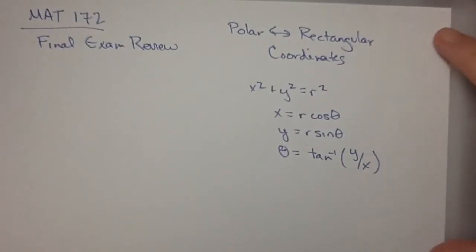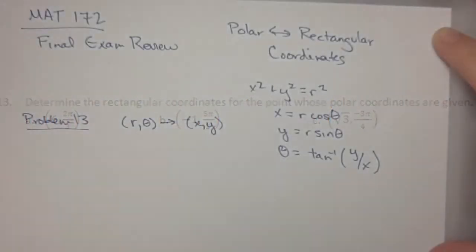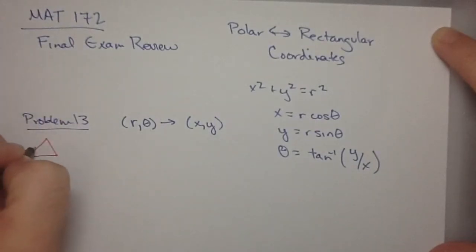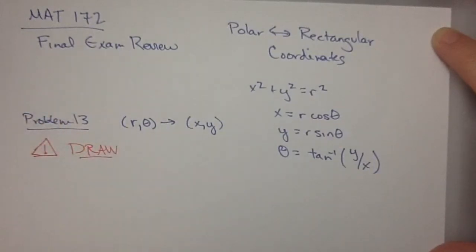So there are a series of problems about this, and we're just going to work through a smattering of them. So if we're looking at problem 13, we're given r and theta and asked to find xy. Now the first thing you have to do is draw, because it'll clear up any uncertainties you have about the sign, whether things are positive or negative, and it'll help you orient yourself to what part of the unit circle you're in.